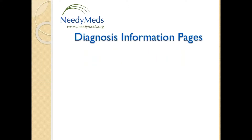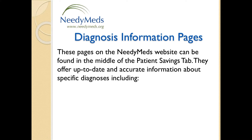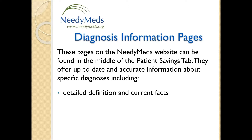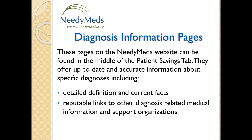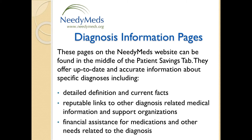Diagnosis information pages are a great example of a destination on our website where we provide up-to-date and pertinent information and help connect people with cost savings programs. These pages can be found in the middle of the patient savings tab, and we'll get to that in just a moment when I transition to the live website. Diagnosis information pages offer up-to-date and accurate information about specific diagnoses including a detailed definition and current facts, reputable links to other diagnosis-related medical information and support organizations, and most importantly financial assistance for medications and other needs related to that diagnosis.